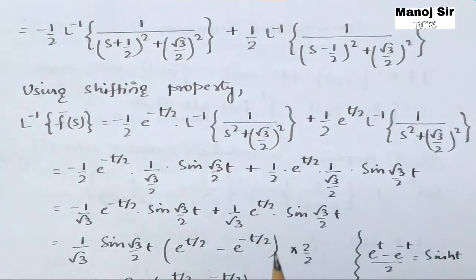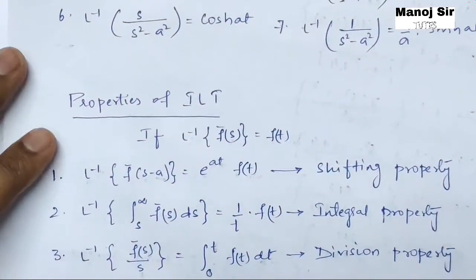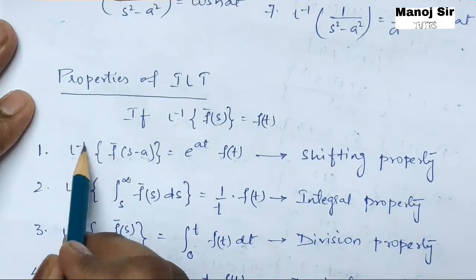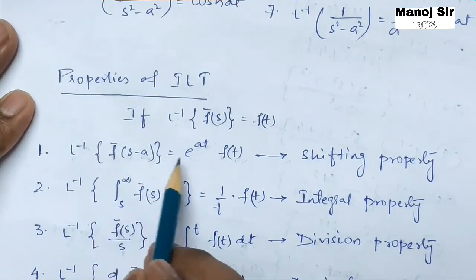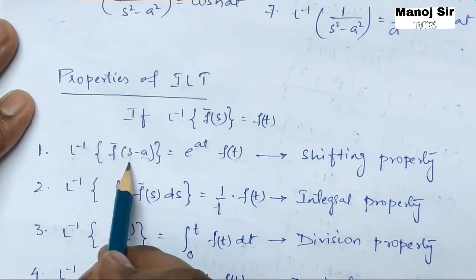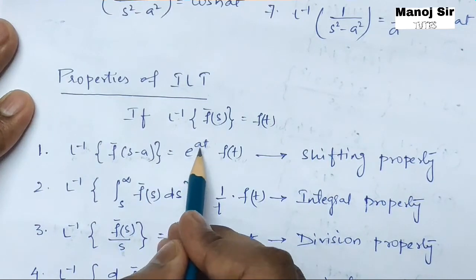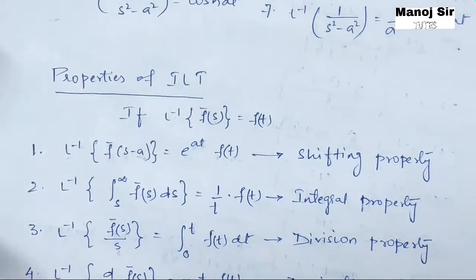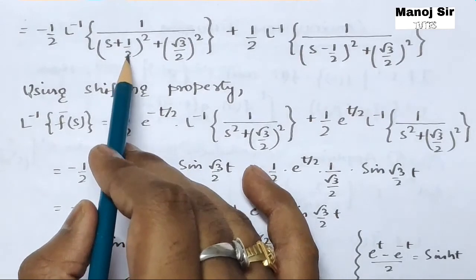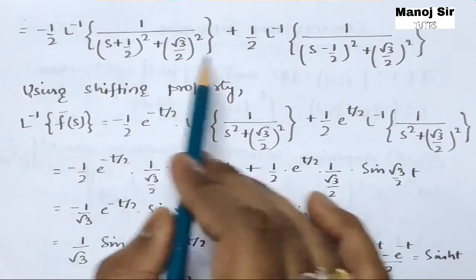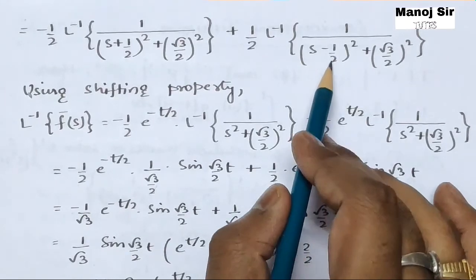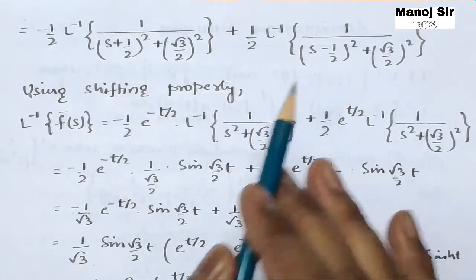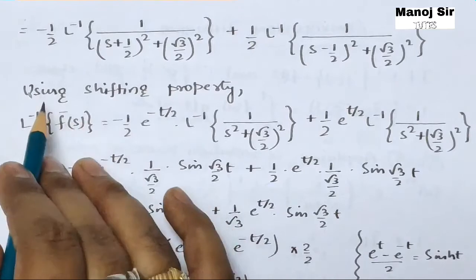We apply the first shifting property: L⁻¹{F̄(s − a)} = e^(at)·f(t). Here, s + 1/2 means a = −1/2, and s − 1/2 means a = +1/2.